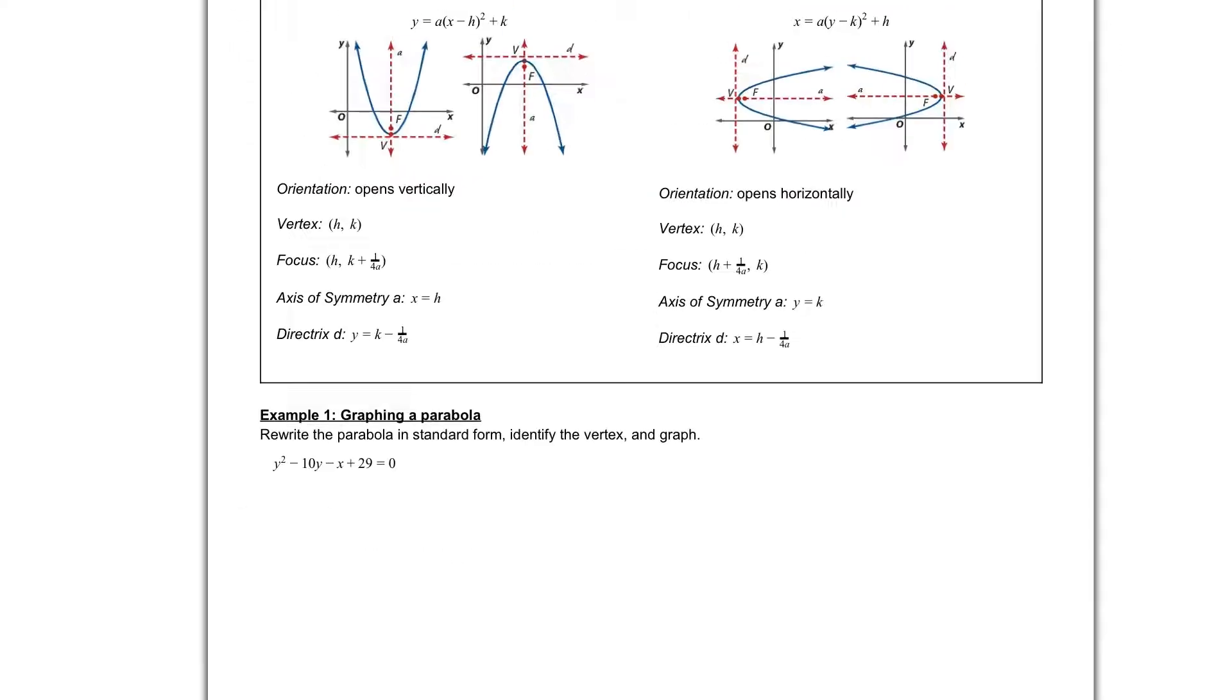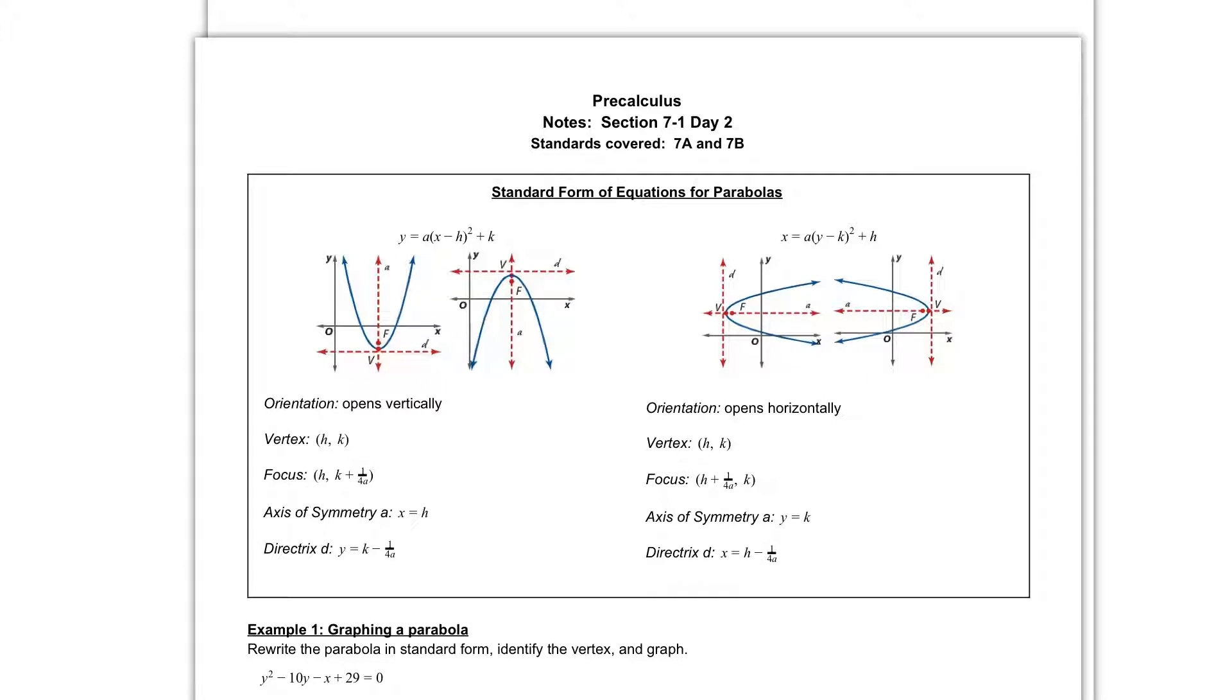In example 3, our y is the one being squared, which tells us that the x is the one that's going to be by itself. So we have an x equals parabola. So if we look back one more time, we know that we are dealing with this equation, an x equals, telling us that our focus is h plus 1 over 4a, k.